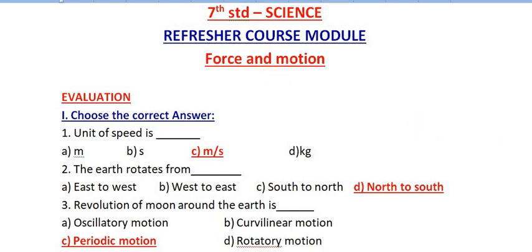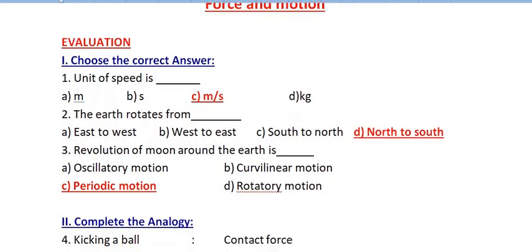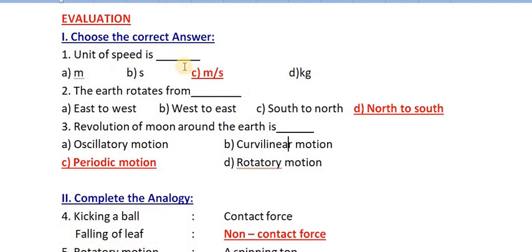Now we are going to talk about the evaluation part. First, choose the correct answer. Unit of speed is - speed is a unit. Speed is meter per second, that is the answer. Next, the Earth rotates from North to South. North to South is the Earth rotation.